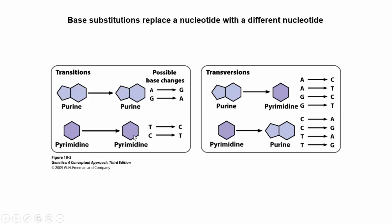Transitions are, on a relative scale, not as severe. However, if we have things called transversions, those could be much more severe — a purine to a pyrimidine, or pyrimidine to purine. They're probably more severe because of the different ring structures: purines have two rings, pyrimidines have one. It's more disruption to the DNA double helix. I always remember the phrase 'aversion to transversion' — it sort of rhymes. So those are the more severe mutations, all things being equal.